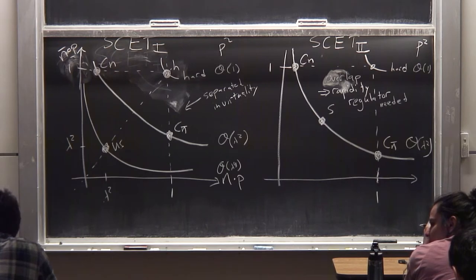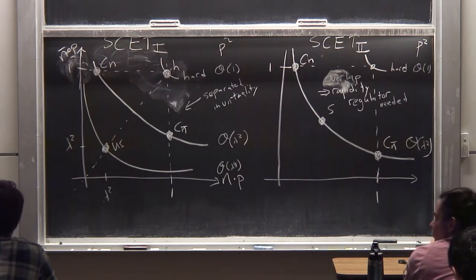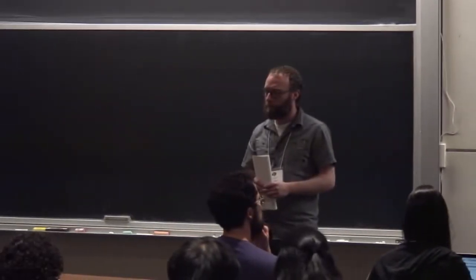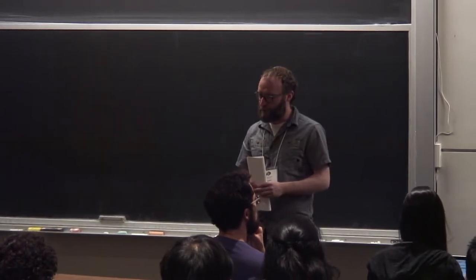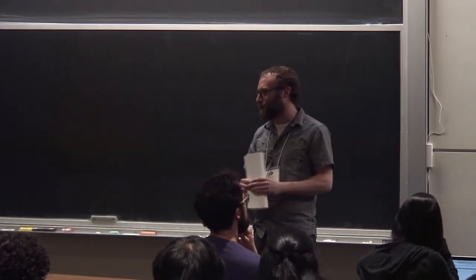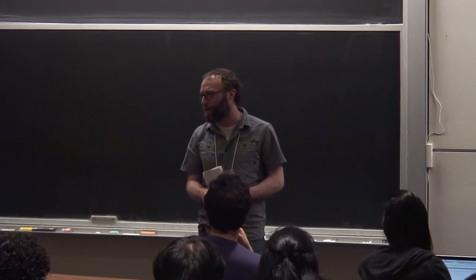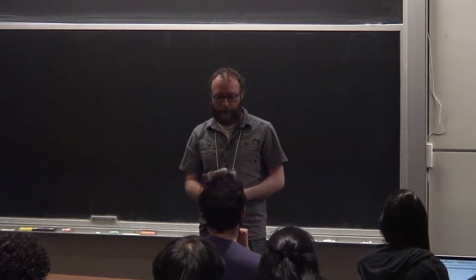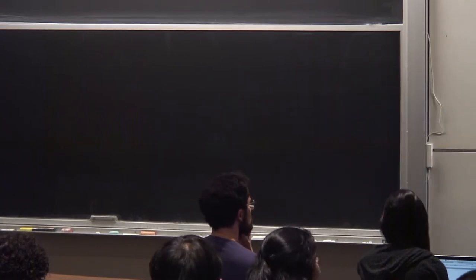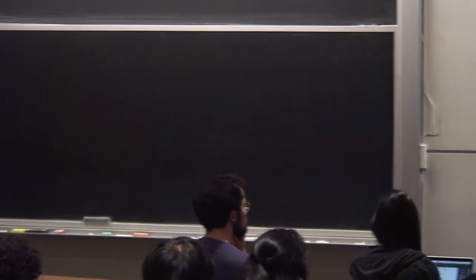A student asks: it feels like going from soft to ultra-soft is basically just how low energy the emitted particle is, so there should be a continuous shift between them, but this looks really discrete. The answer: it is definitely discrete—it depends on the process. You decompose your integral into regions and see what regions contribute. It really is just a matter of figuring out the right power counting to get the infrared of the theory right.